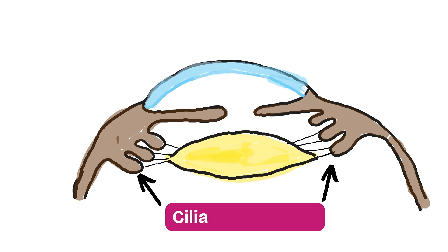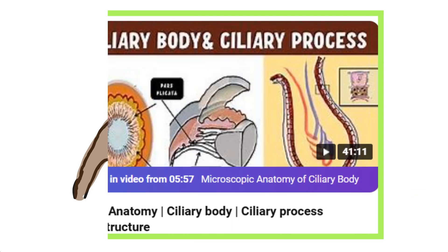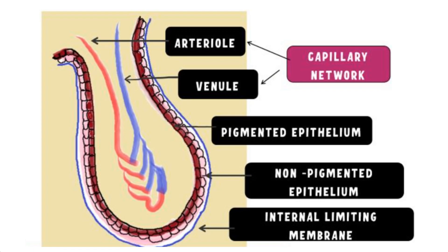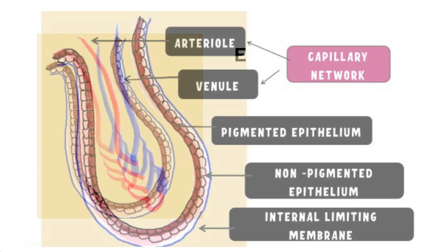The aqueous humor is produced by the ciliary processes of the ciliary body. If you have seen our video on the anatomy of the ciliary body and the ciliary processes, you will recall we discussed their layers and structures in detail. The link to that video is in the description and also on the right side of the screen.